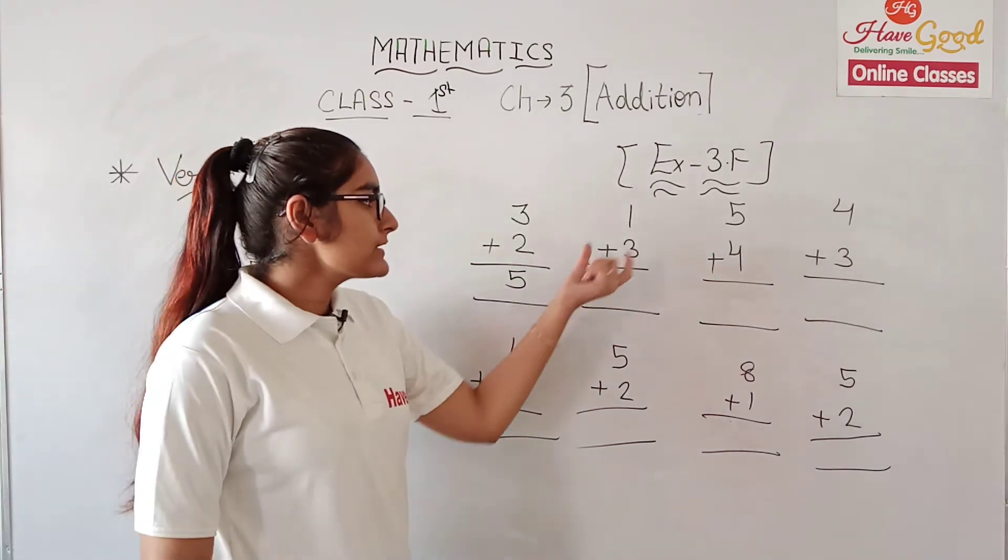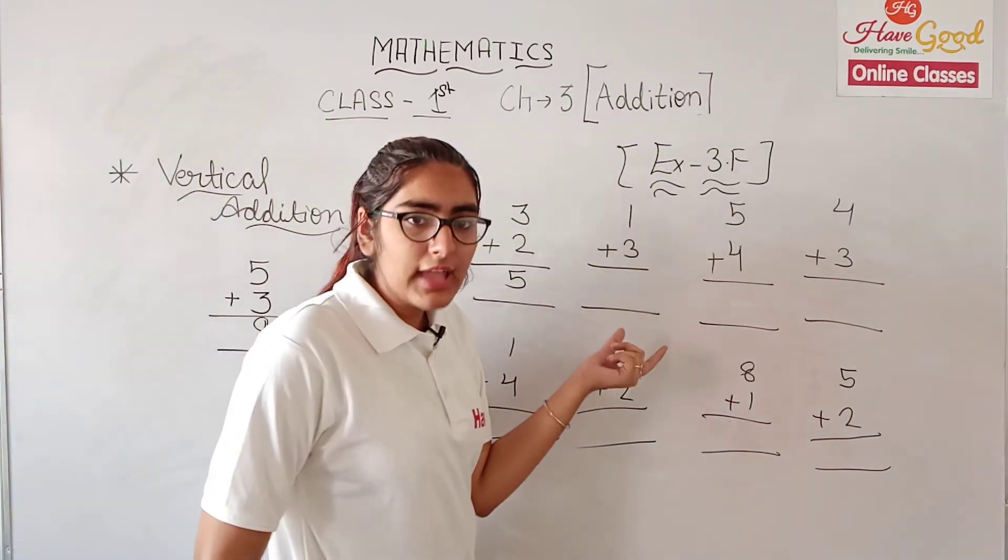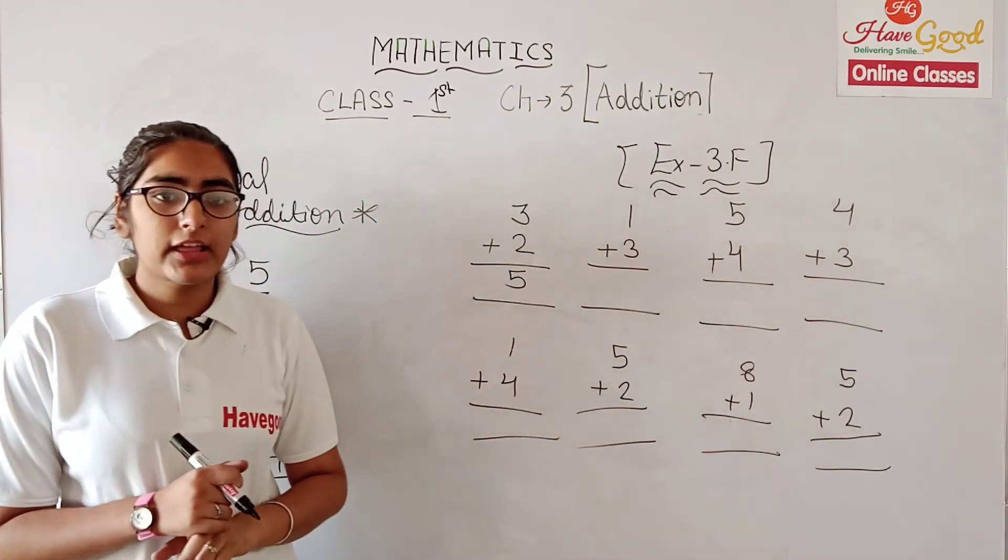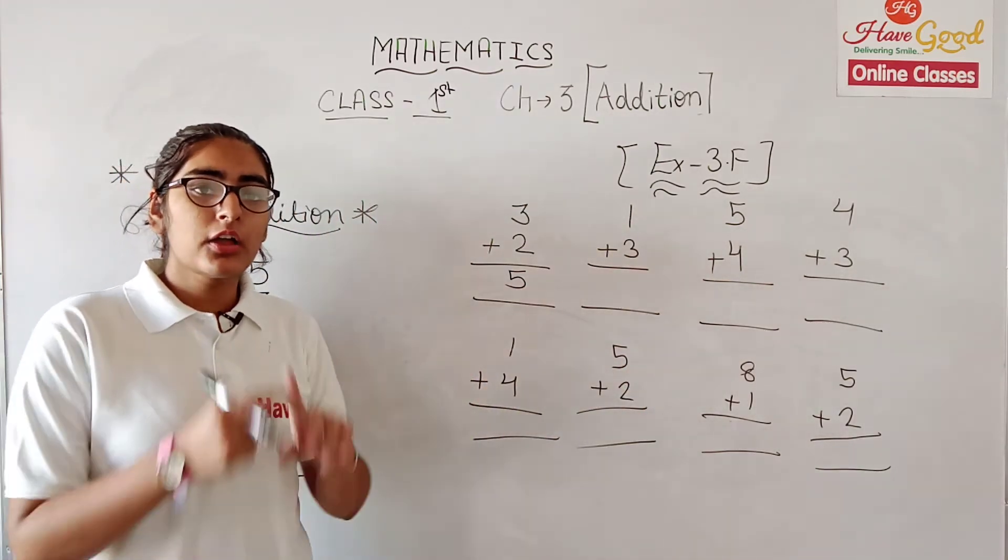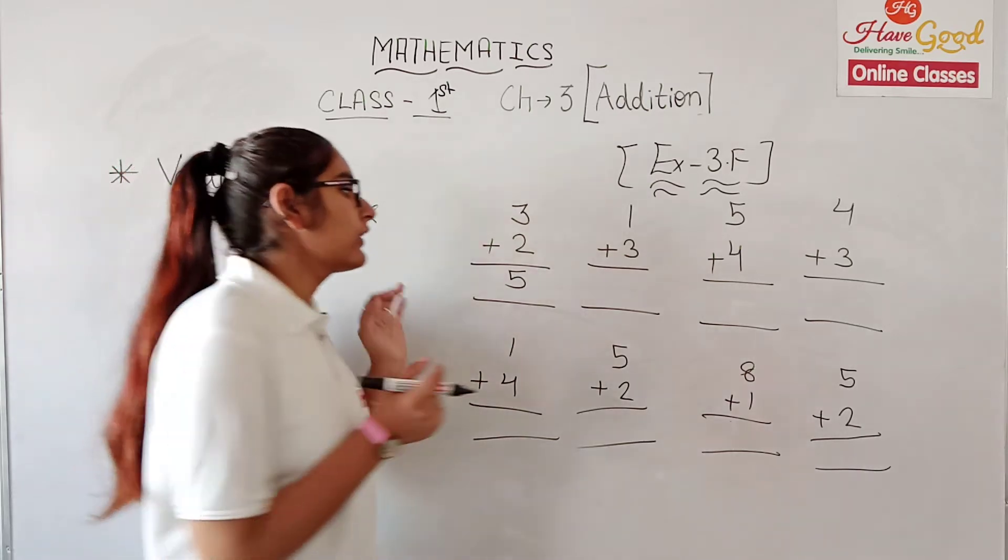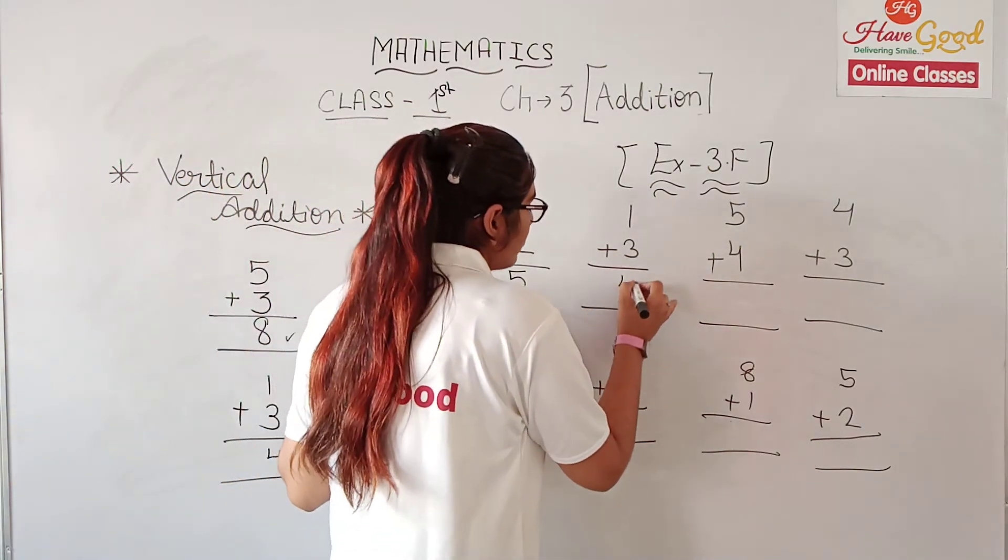Now we have 1 forward counting 3. So we have 1, then forward counting: 2, 3, 4. Now our answer is 4.